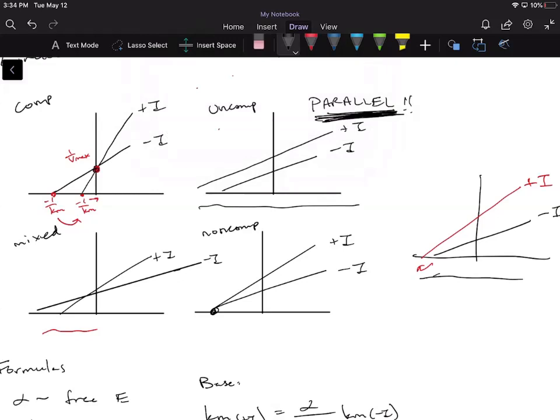The reason why I'm saying you have to make sure it's parallel for uncompetitive is, notice how for this one, if you continue drawing the lines they intersect in a different quadrant. So they're still not fully parallel. So that's why it's very important, and this is a mixed inhibitor. This is another example of mixed.